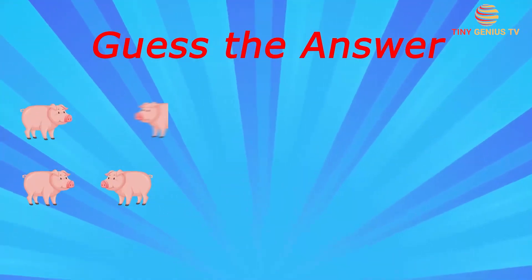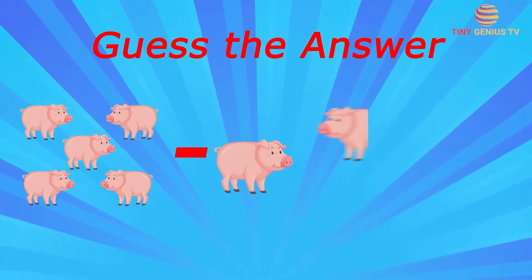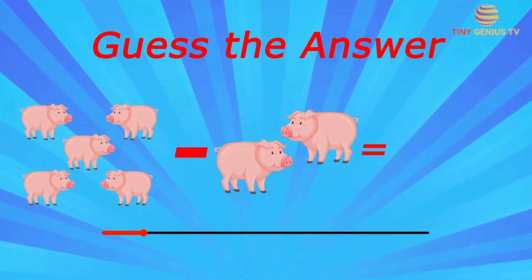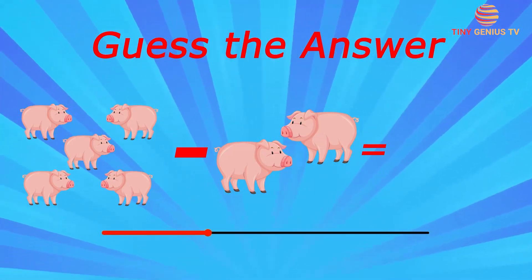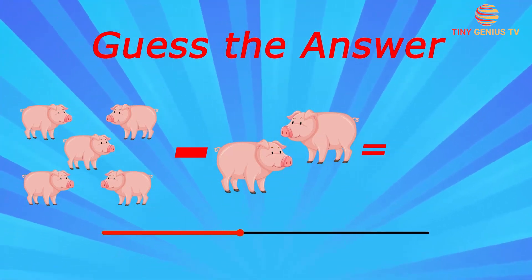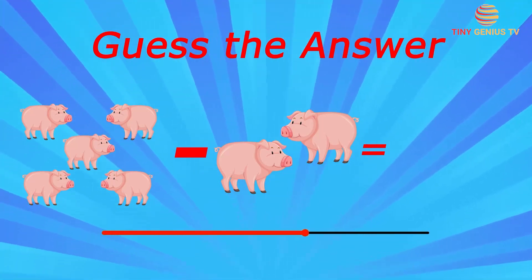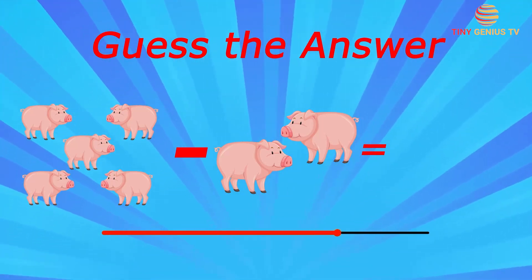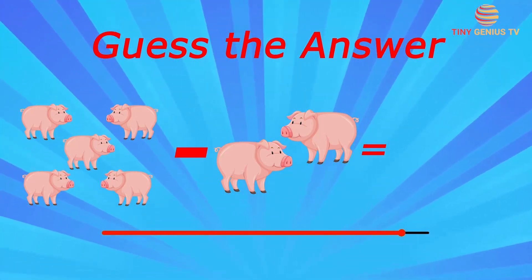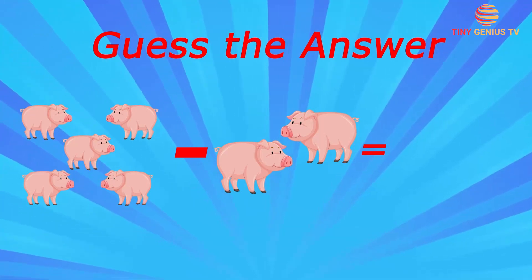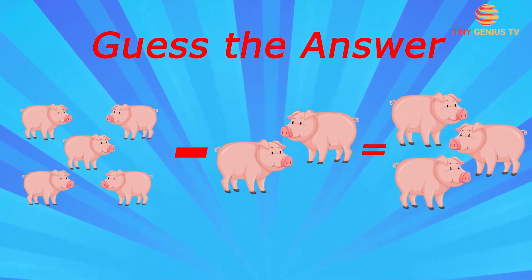Five pigs are there in the farm where two of them are running. How many pigs are not running in the farm? Three pigs are not running in the farm.